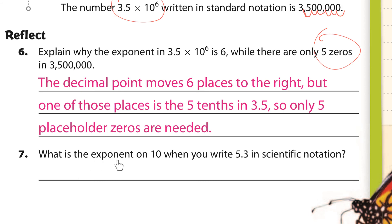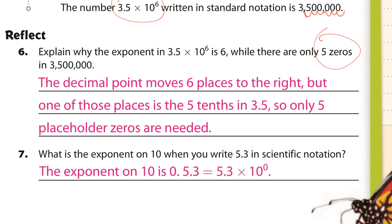And why is the exponent on 10 zero when you write 5.3 in scientific notation? Because the exponent on 10 is 0 — it's 5.3 times 10 to the zero power.